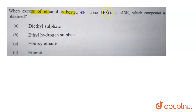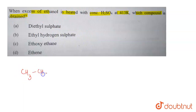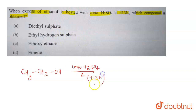The question is: when excess of ethanol is heated with concentrated H₂SO₄ at 413 Kelvin, which compound is obtained? Now we have ethanol, which is CH₃CH₂OH, and it is heated with concentrated H₂SO₄ at 413 Kelvin.